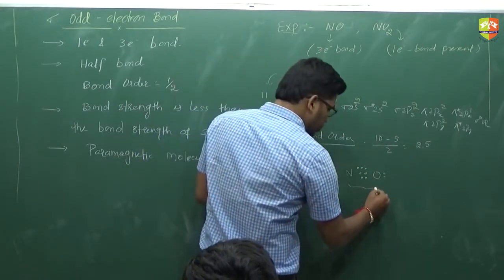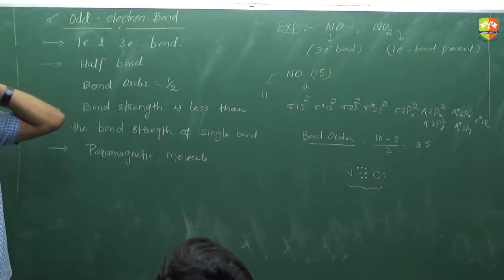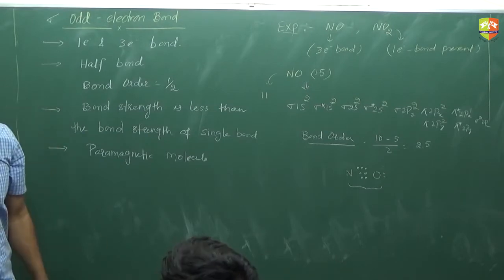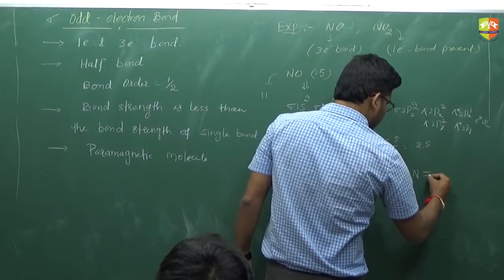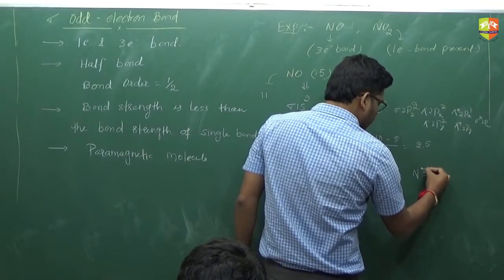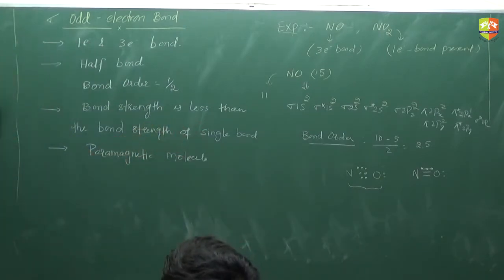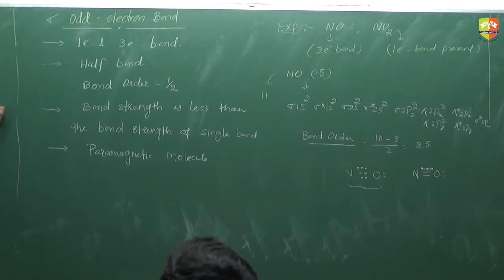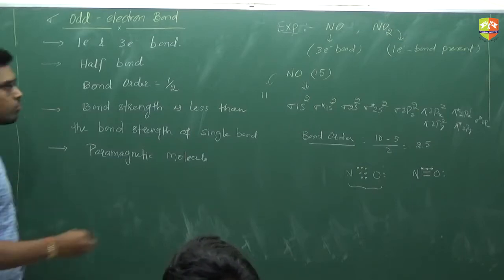That's why we generally don't draw the Lewis structure of a molecule which contains an odd number of electrons. But you have to draw it. The molecule has one double bond, O with one lone pair, and one odd electron bond containing 3 electrons in that bond. The bond order of that 3-electron bond is half, and the double bond accounts for 2 — that's why the total is 2.5.